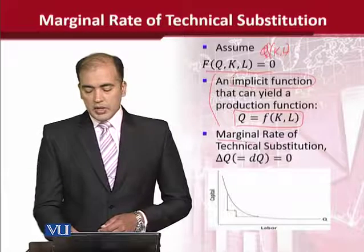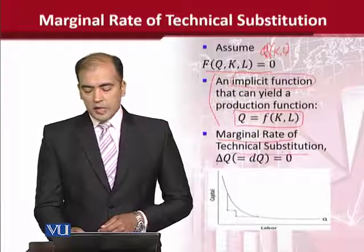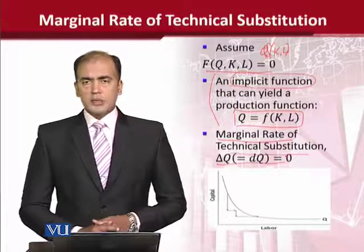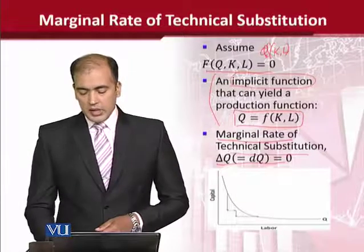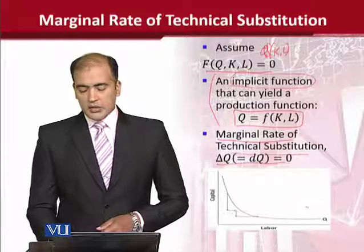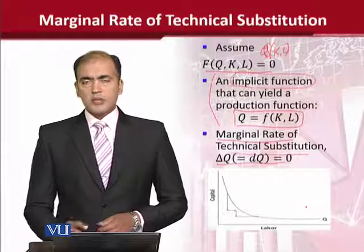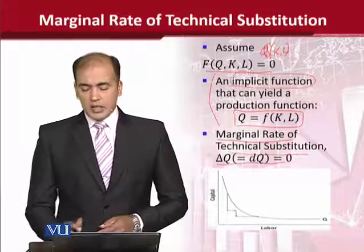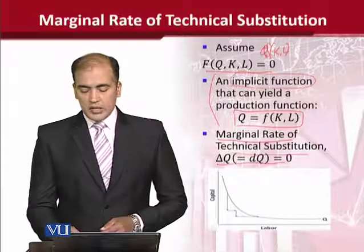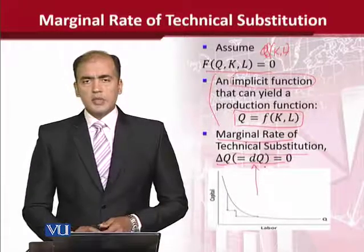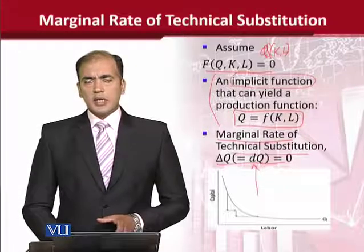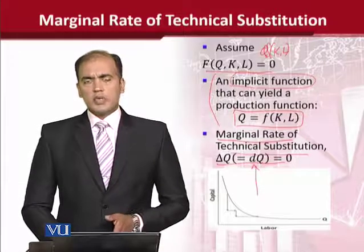Before we go there, we need to establish that for MRTS, delta q is equal to 0, and that is quite evident from this diagram. As you can see, the pre-condition for an isoquant is that the level of output will remain the same — that is, the change in output will be equal to 0. This is a very useful condition that allows us to perform implicit differentiation.